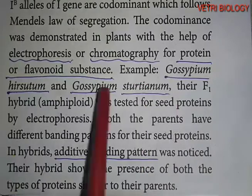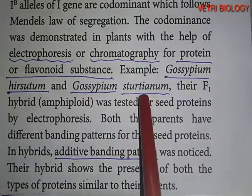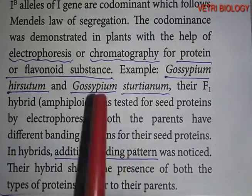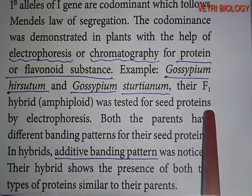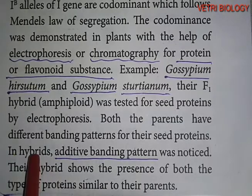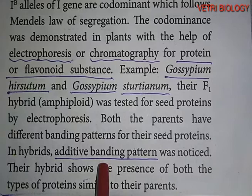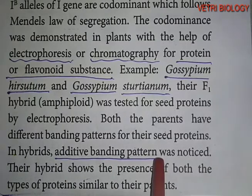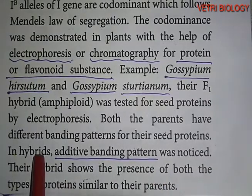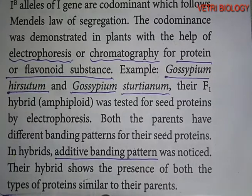Gossypium hirsutum and Gossypium sturtevanum are cotton varieties. In these two plants, seed proteins have different banding patterns. The hybrid seed proteins show two types of banding patterns — this is called the additive banding pattern. So in the hybrid, there are two types of proteins present. The hybrid shows the presence of both types of proteins, similar to both parents.